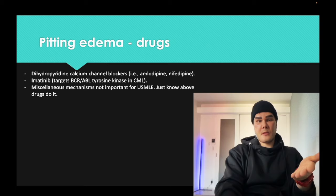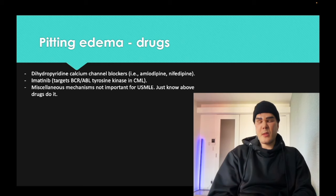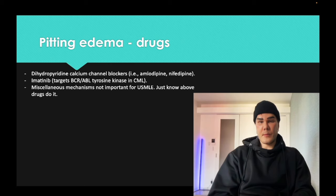Imatinib is a drug used for CML that targets the BCR-ABL tyrosine kinase. The 9;22 translocation Philadelphia chromosome forms an oncogenic tyrosine kinase fusion protein, and imatinib targets that fusion protein. It's one of the more obscure causes of peripheral edema — just know that these two drugs (amlodipine and imatinib) can cause it.